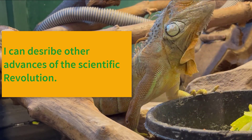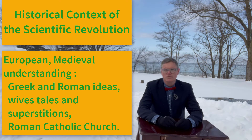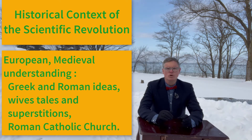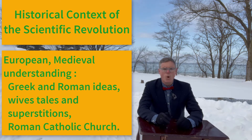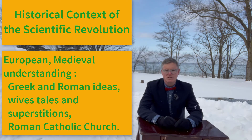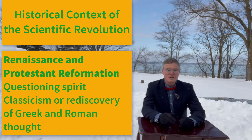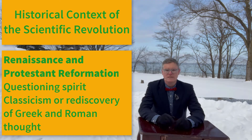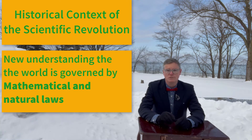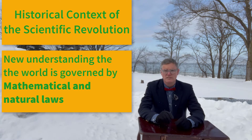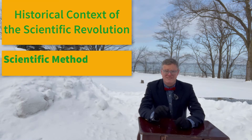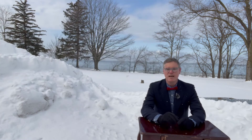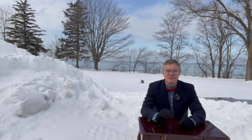European medieval understanding of the world was shaped by Greek and Roman theories, wives' tales and superstitions, and the teachings of the Roman Catholic Church. The questioning spirit of the Renaissance and the Protestant Reformation facilitated a shift. In the mid-1500s, scholars now recognized the world to be governed by mathematical and natural laws. These natural laws could be understood by people and discovered through the scientific method.